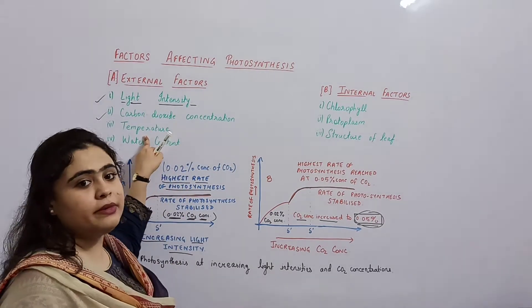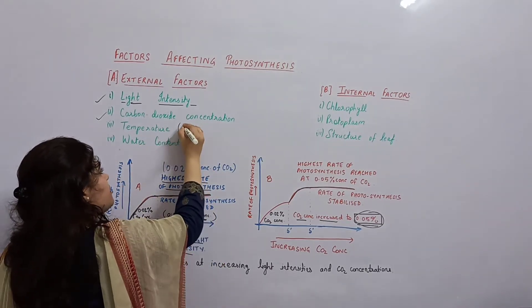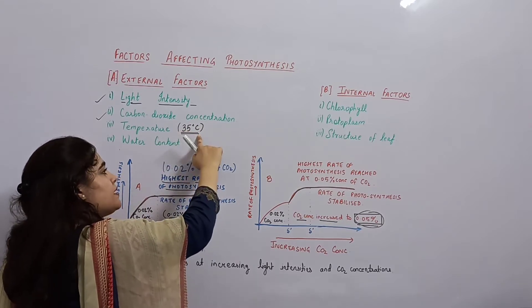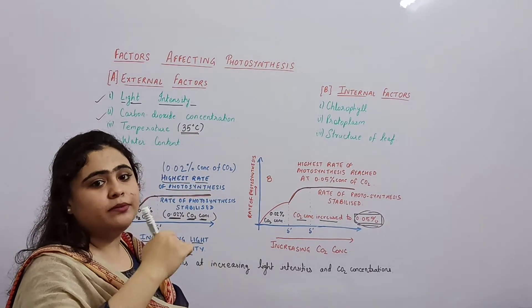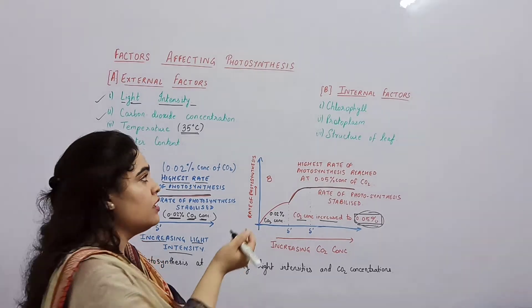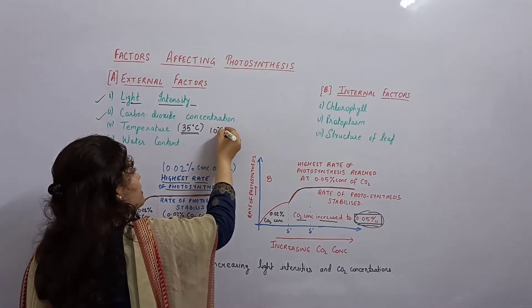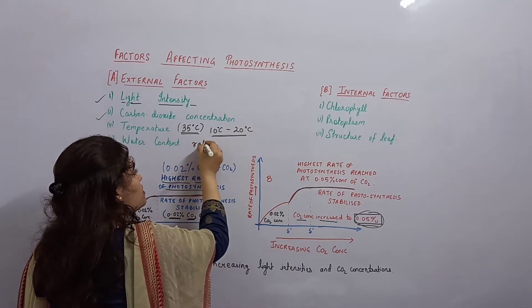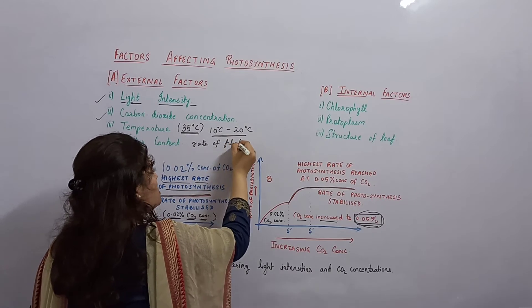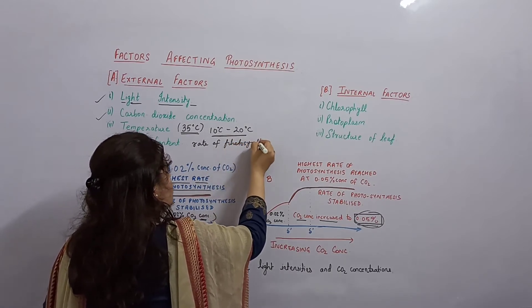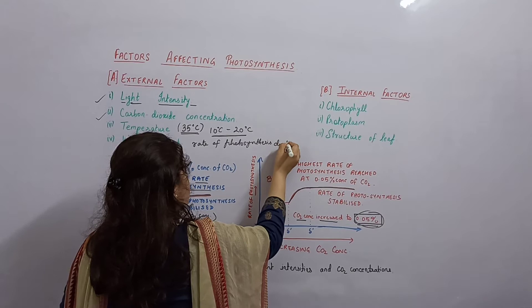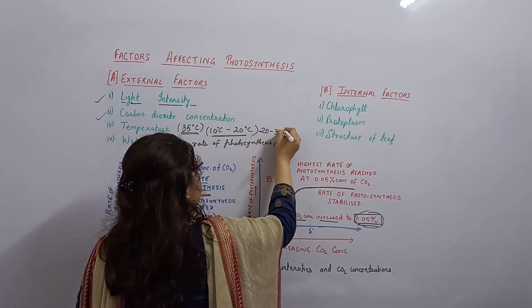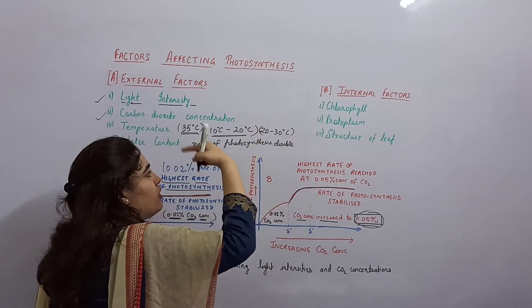Next one is temperature. Optimum temperature is 35 degrees centigrade for photosynthesis. Up to this temperature, the rate of photosynthesis will double. If 10 to 20 degrees centigrade, for every 10 degree rise in temperature, rate of photosynthesis becomes double. 20 to 30 degree rise in temperature, the rate of photosynthesis will double.